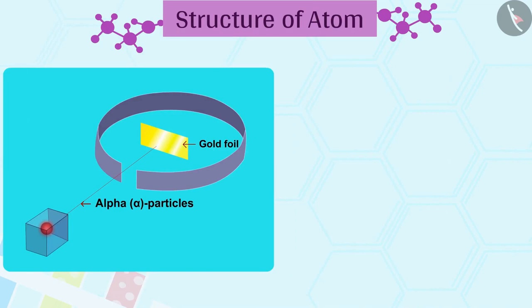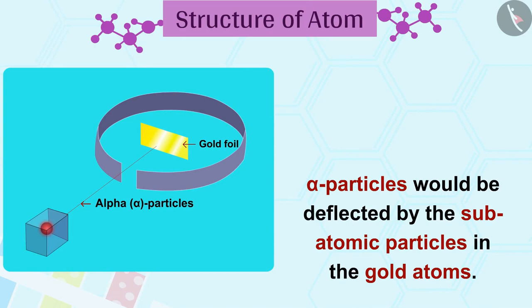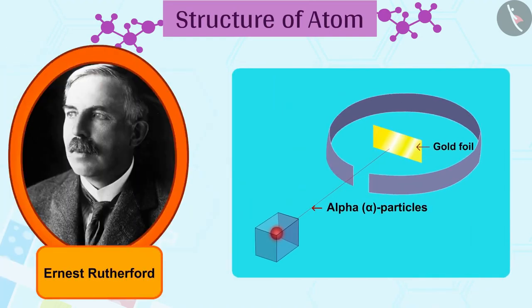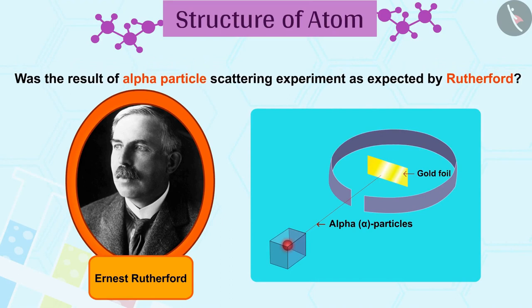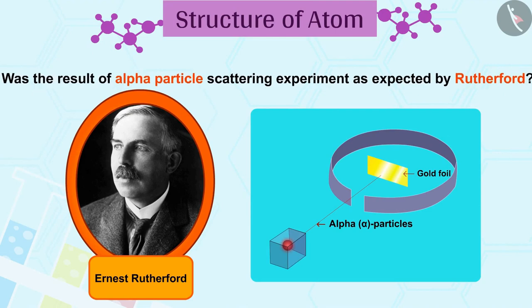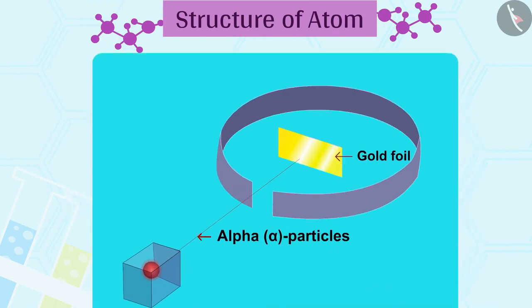It was expected that alpha particles would be deflected by the subatomic particles in the gold atoms. Since the alpha particles were much heavier than the protons, he did not expect to see large deflections. But the alpha particle scattering experiment gave totally unexpected results.